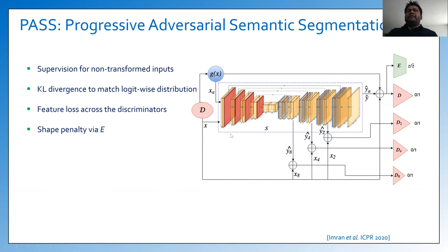We employed KL divergence to penalize the model for not maintaining similar logit-wise distributions between the labeled data and the transformed data that came without labels. From each of the discriminators, we calculate feature loss by collecting feature maps from their intermediate convolutions. We also used a shape encoder E to penalize the model for not maintaining similar shapes in the predicted segmentation as in the ground truth segmentation mask. The encoder takes a stacked input of ground truth and stacked input prediction to get the latent representations Z and Z-hat, and then we calculate mean squared error between them as the loss from the shape encoder.